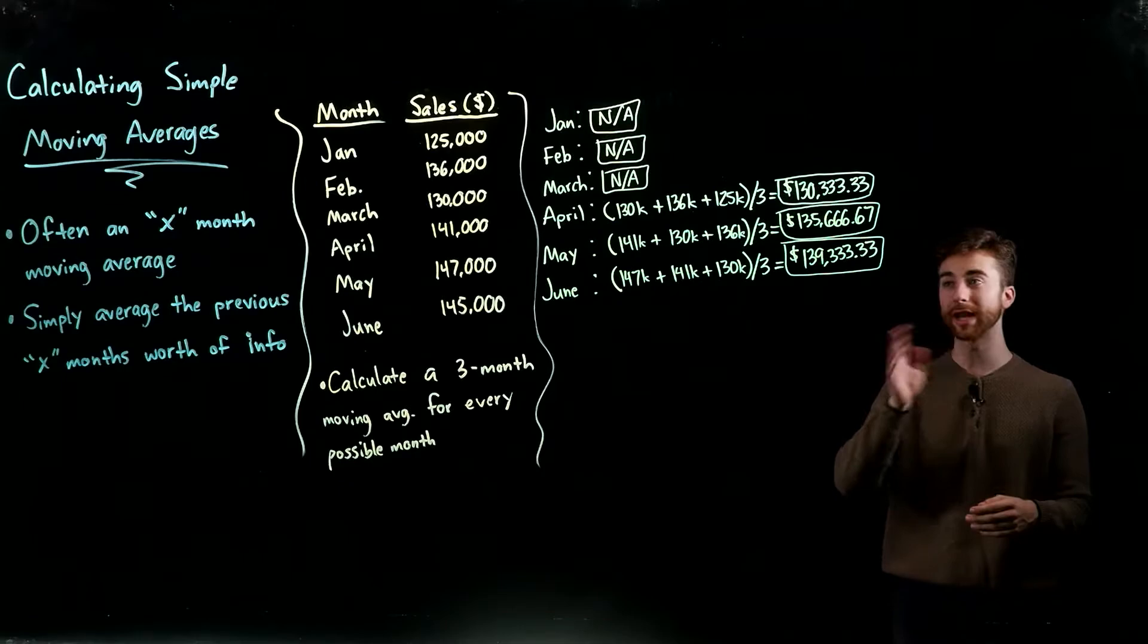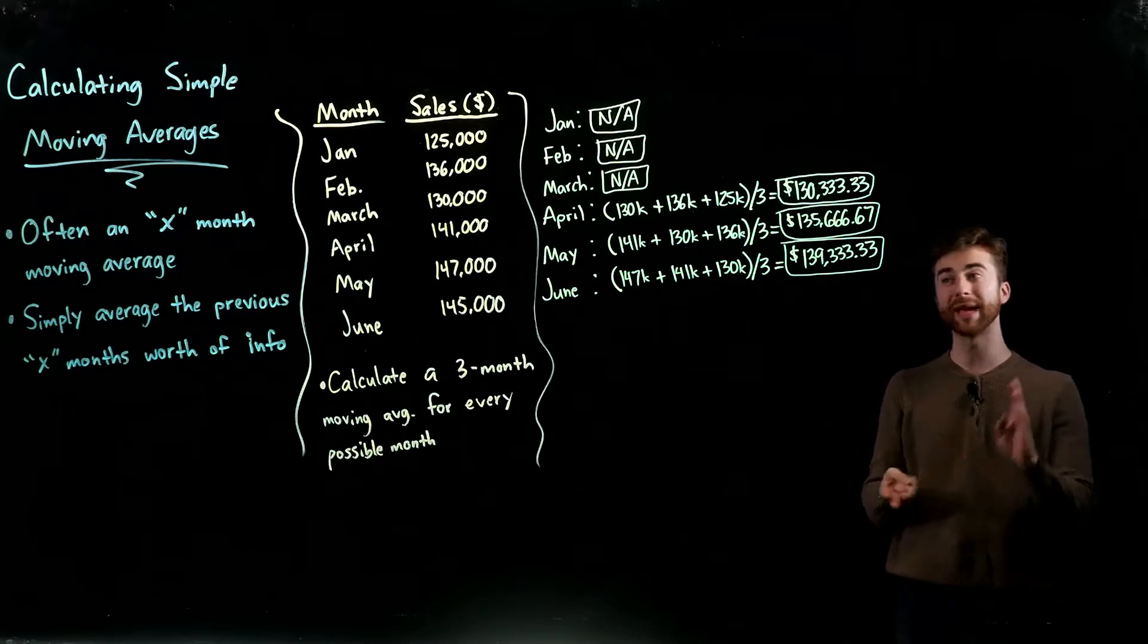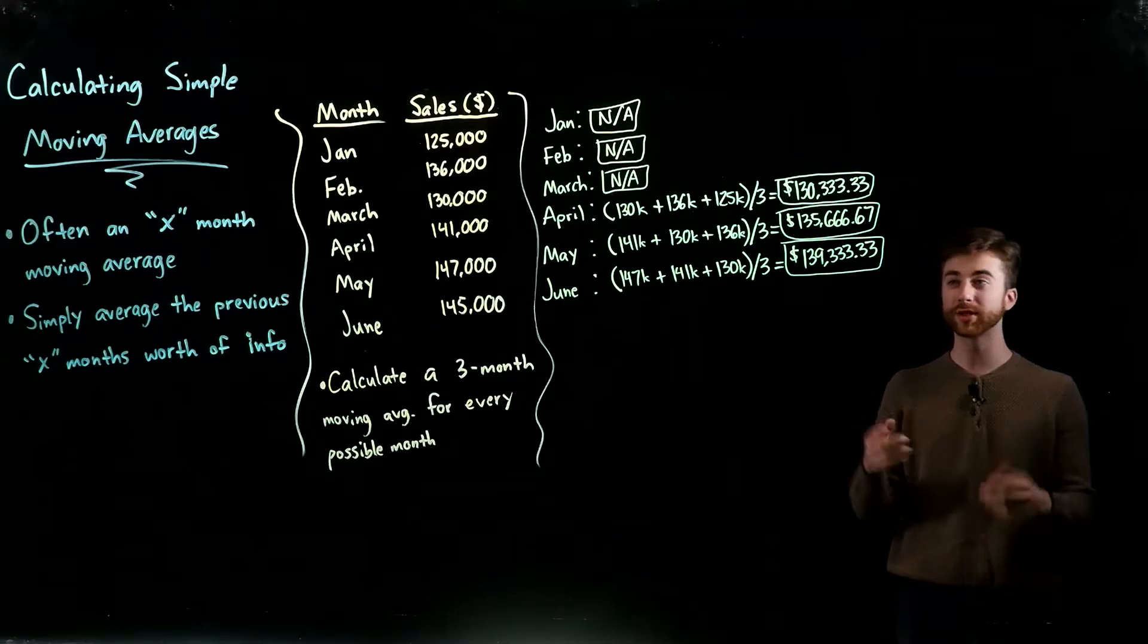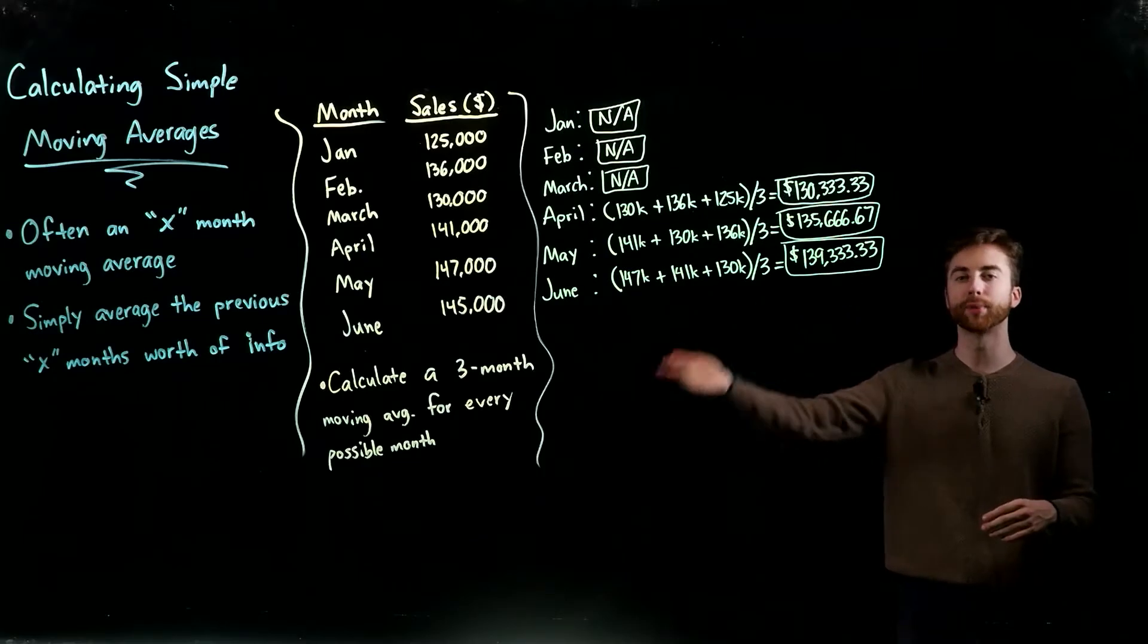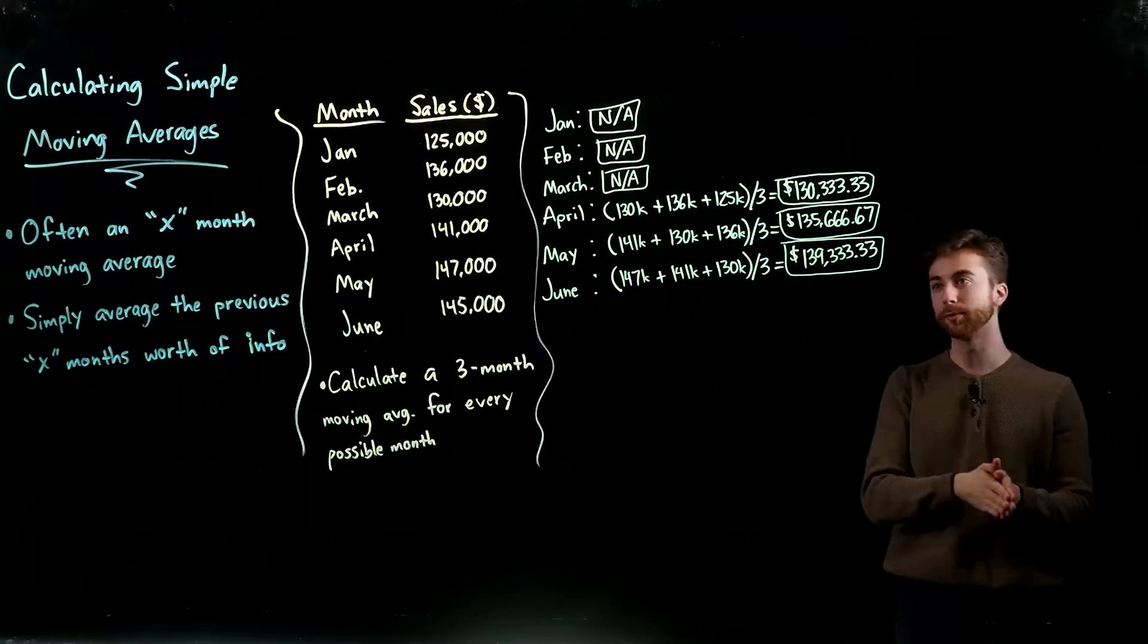January and, as a matter of fact, February and March don't have enough information to do a three-month moving average. Because at most, when we're at March, we have the previous two months, but we need December of the previous year in order to do the three-month moving average for March.